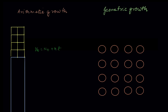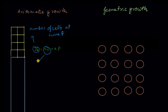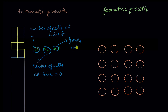Now let's take a look at the formulas representing the two growths. In arithmetic growth the formula is: Nt = N0 + rt. Here, Nt is the number of cells at time t, N0 is the number of cells at time zero, r is the growth rate constant — a constant that differs from plant to plant or organism to organism — and t is time.